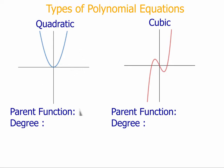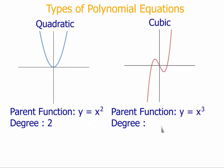We know what quadratic equations look like. The parent function for a quadratic equation is y equals x squared, and because the highest exponent is 2, this has a degree of 2. This is a cubic function, which has a parent function of x cubed and a degree of 3.